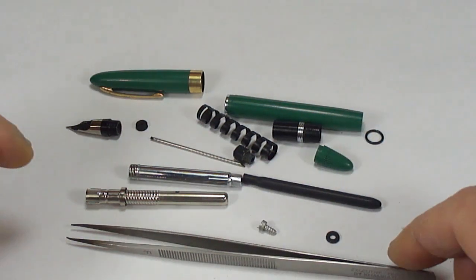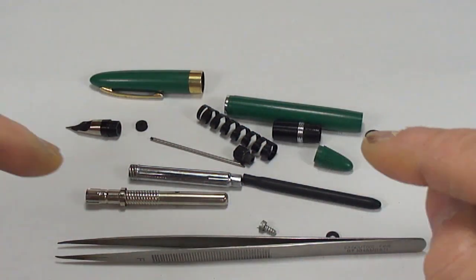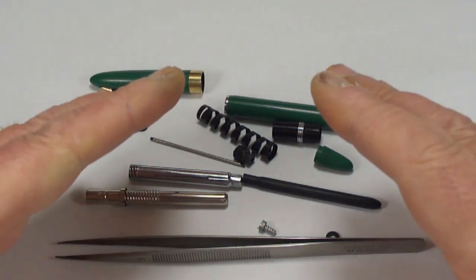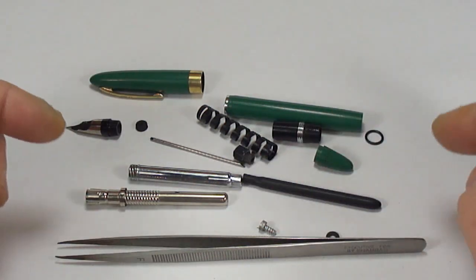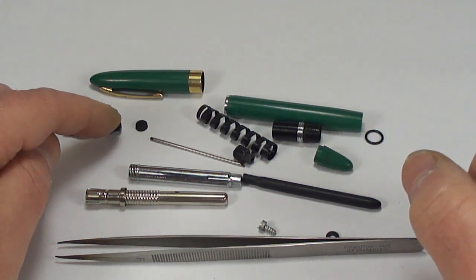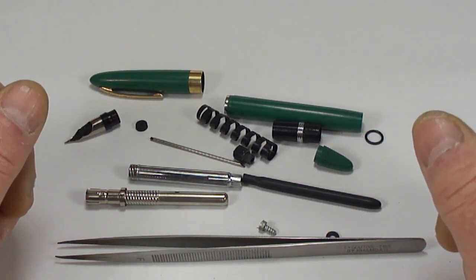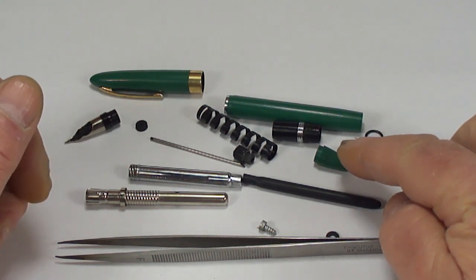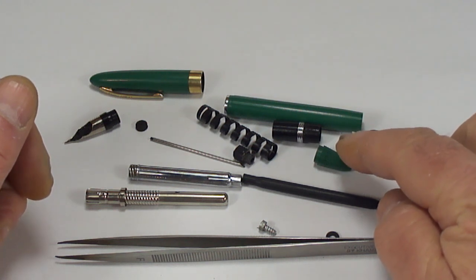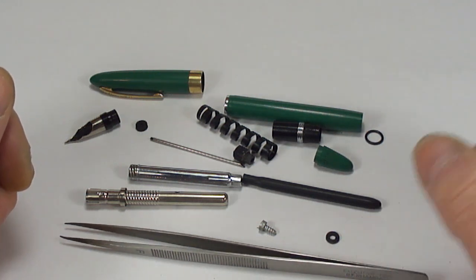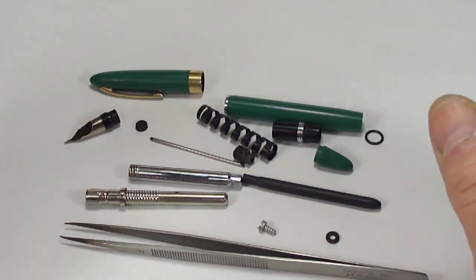So that's basically inside the Schaefer snorkel fountain pen. What I'll do now, we'll put the new sack on, we'll put the new o-ring inside there, we'll put a new point seal to the end of the feed there. We'll replace the blind knob seal inside the blind knob in there. And once we've done that, I'll come back and show you the pen fully assembled.